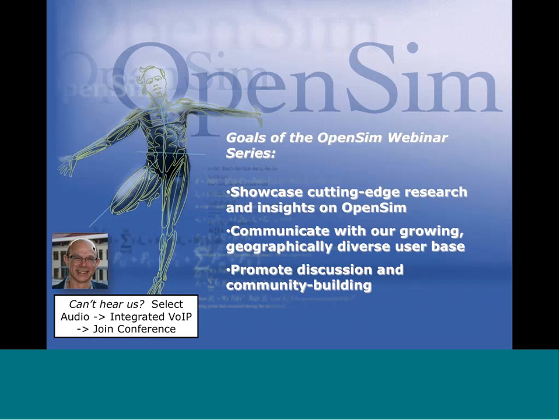Before we get started, I want to let you know about OpenSim. It's a freely available software application for visualizing musculoskeletal structures, simulating movements of humans and animals, and a variety of other applications. It includes tools for performing inverse dynamics, optimizing to estimate muscle and joint forces, methods for creating simulations from motion capture data, and tools for analyzing and visualizing the results of simulations. Our goal in the webinar series is to showcase research being performed using OpenSim and to provide an easy platform to communicate and collaborate with the OpenSim community.